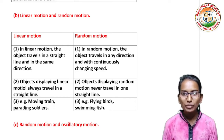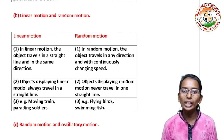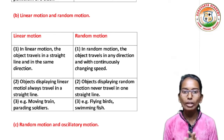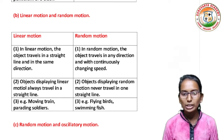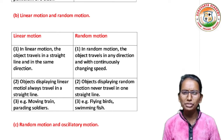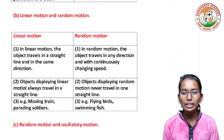Examples of linear motion: a wind train, parading soldiers, etc. Examples of random motion: flying birds, swimming fish, etc.